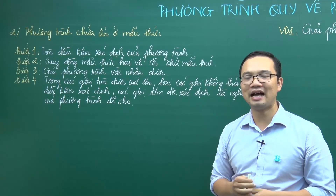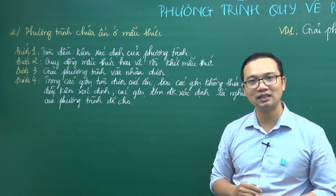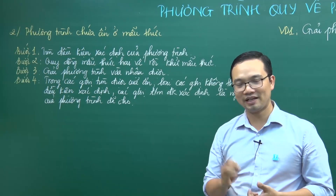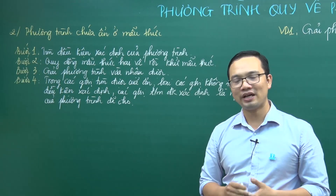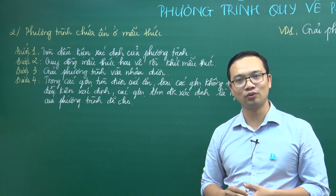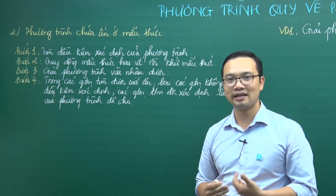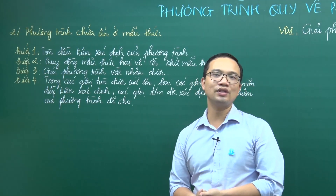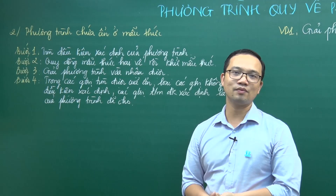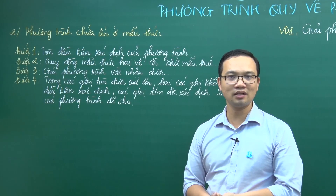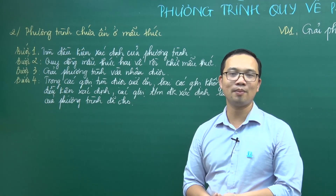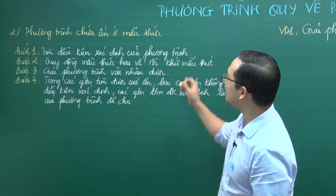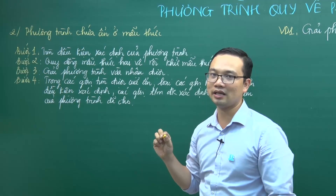Bước thứ nhất: tìm điều kiện xác định của phương trình. Khi ẩn ở mẫu, bao giờ chúng ta cũng làm bước đầu tiên là tìm điều kiện xác định — đặt điều kiện để mẫu thức khác không.